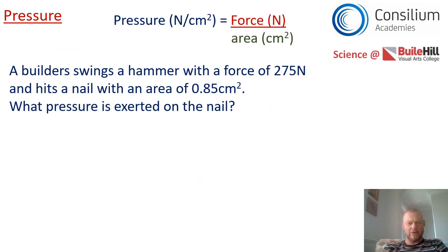Time for you to have a go. I've left the equation on screen, pressure equals force divided by area. The question is: a builder swings a hammer with a force of 275 newtons and hits a nail with an area of 0.85 centimetres squared. What pressure is exerted on the nail? Get yourself a piece of paper and a pen and see if you can answer it. Pause the video now and we'll check our working in a second.